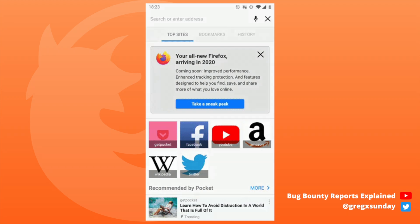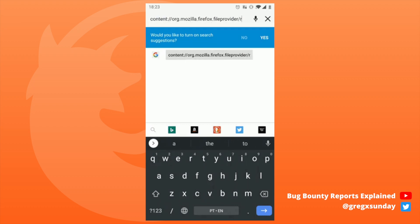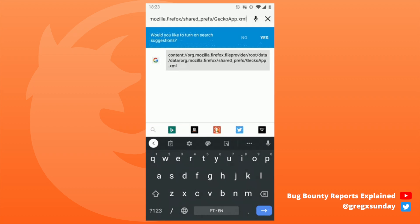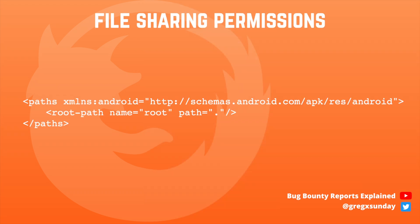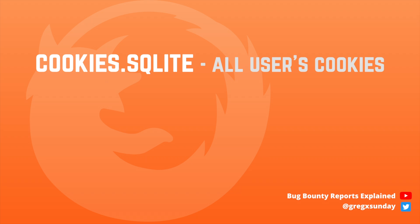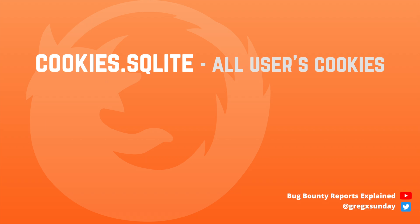When defining those content URIs, the application can specify directories that a user can open. But Firefox used a configuration that means the user can read any file that Firefox has access to. Among other configuration files inside the Firefox directory, there is one that will be especially interesting for the attacker: it's cookies.sql, which contains all cookies for a specific profile. Stealing those files would allow the attacker to take over all accounts to which the victim is currently logged in. But first, the attacker would have to read the profiles.ini file, which would reveal the locations of the cookie databases.